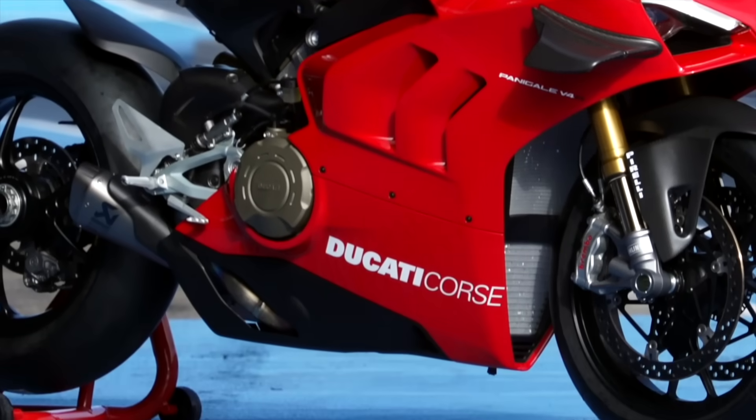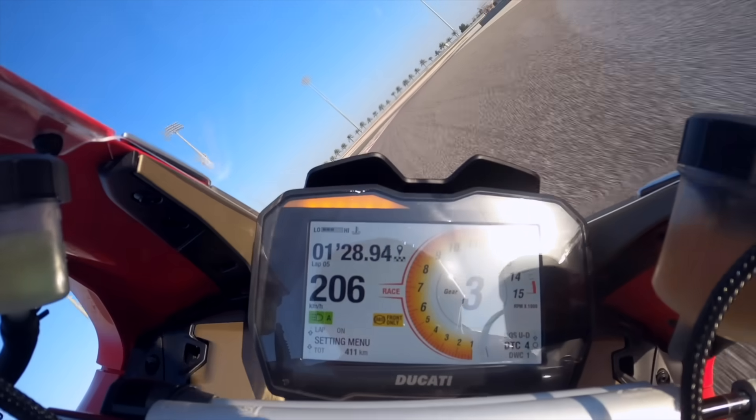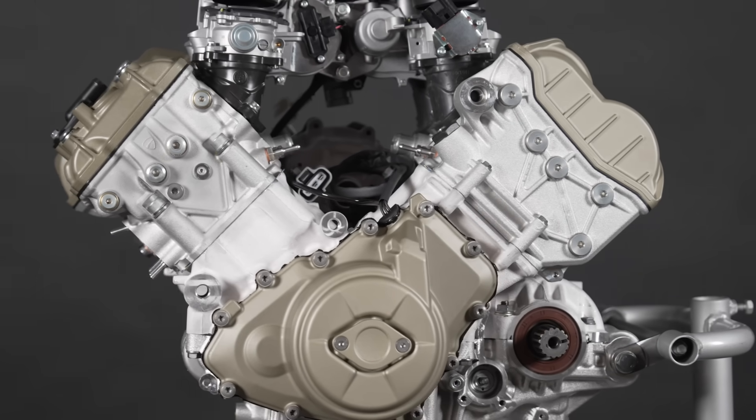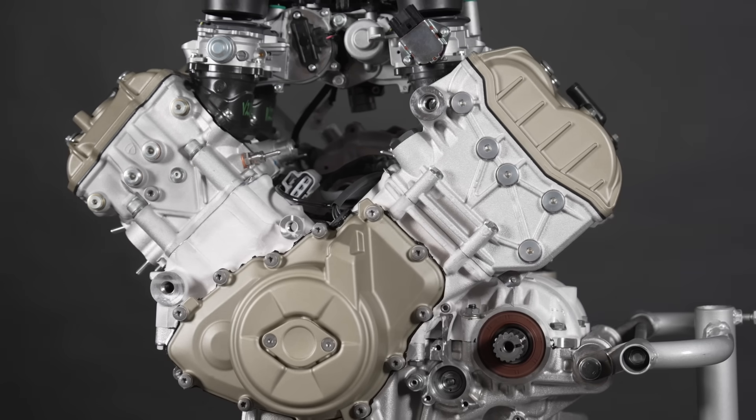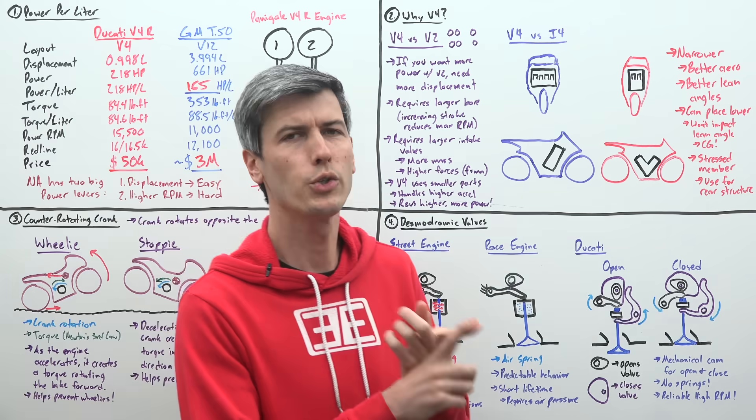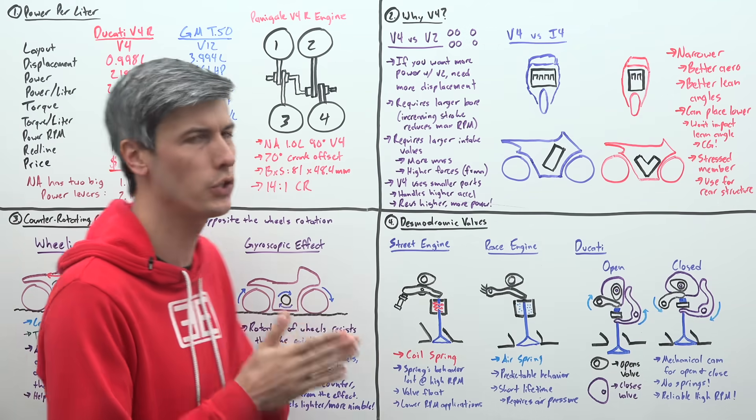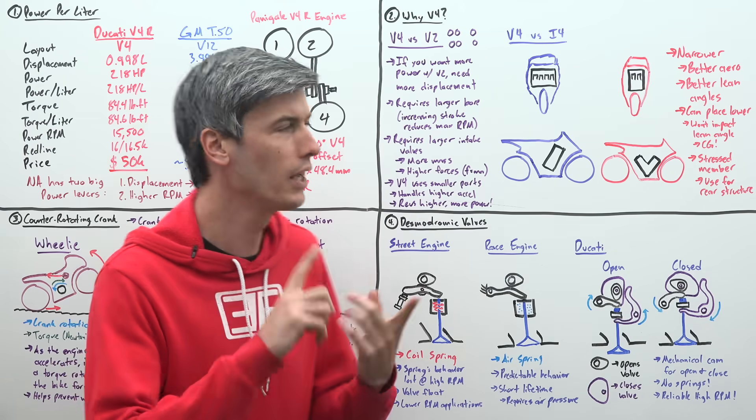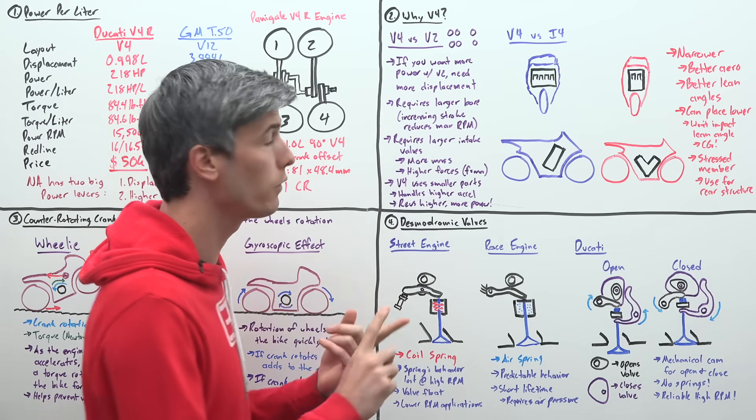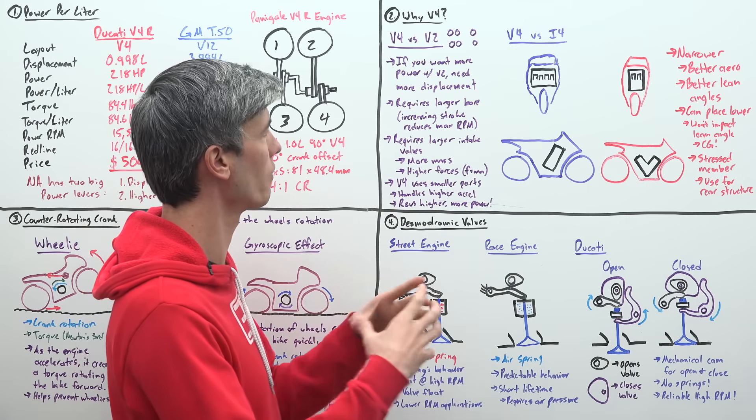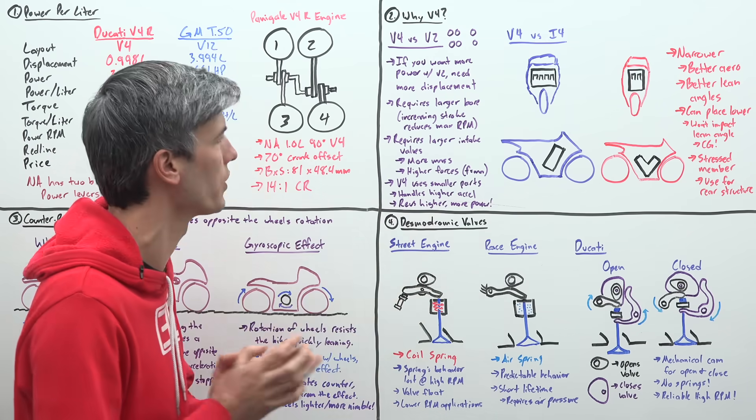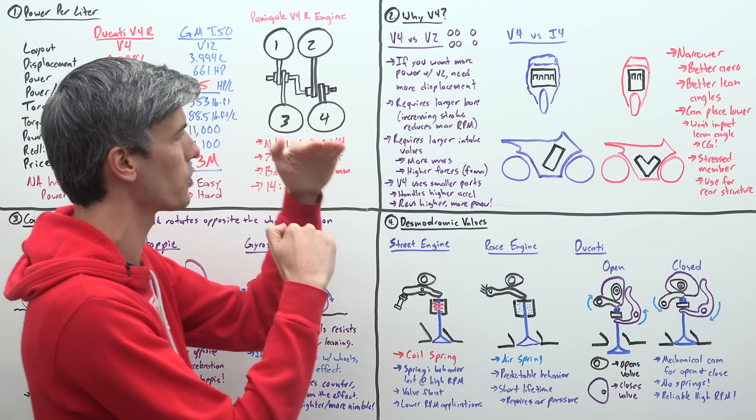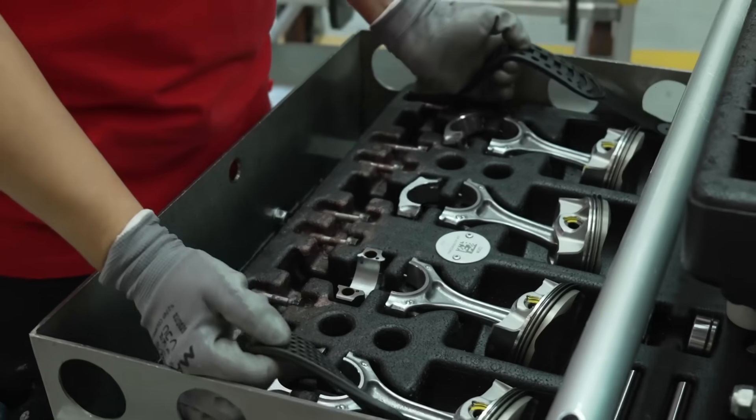Now, the theme with Ducati when you look at these superbikes is that if there's a performance gain to be had, even at the expense of complexity, they'll make it work. Sure, a V4 is a much more complicated engine than an inline-four, but it offers significant advantages. So why choose a V4? First, let's compare it to a V2, because Ducati has used a lot of V2s. Well, remember, if you want more power, you either need a bigger engine or you rev higher. If you want to make the engine bigger with a V2 versus a V4, that means you're going to need a larger bore, the width of your cylinders. If you increase the stroke, that means now your piston speeds are going to get faster. So ultimately, there's a limit on stroke. If you want to increase the size of the engine, you have to increase that bore.